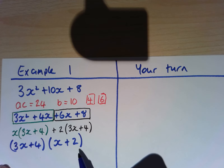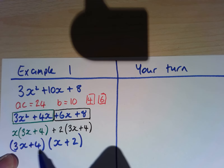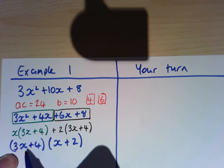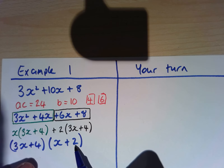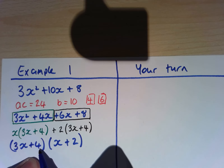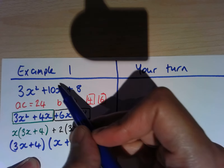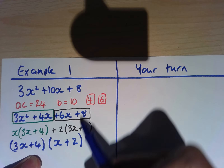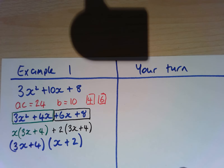I can check it by expanding out. 3x times x gives me 3x squared, which is what we want. 3x times 2 is 6x, and then we've also got a plus 4x — 6x and 4x gives me this 10x. And 4 times 2 gives me 8. We can see that it's worked.